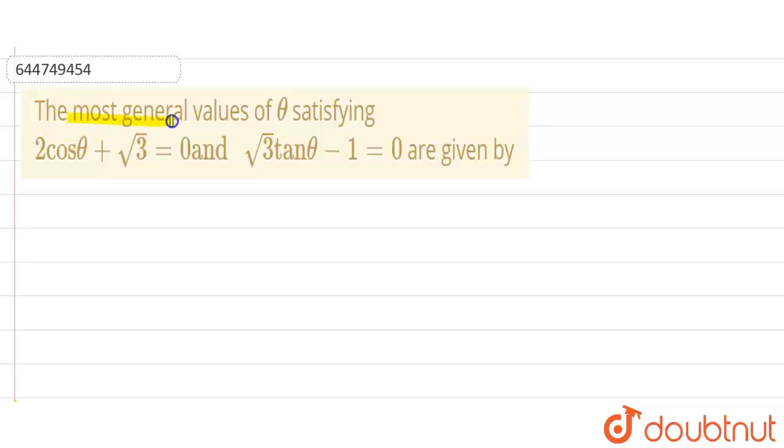The most general values of theta satisfying 2 cos theta plus root 3 equals 0 and root 3 tan theta minus 1 equals 0 are given by: